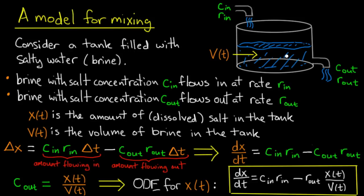How do you determine that? Well, you want to know what the concentration out is. So you divide the total amount of salt by the total volume. That gives you the amount of salt per unit of volume. x over v.